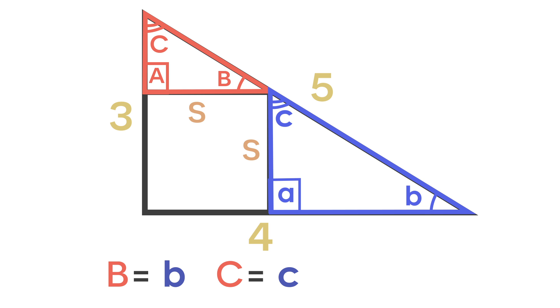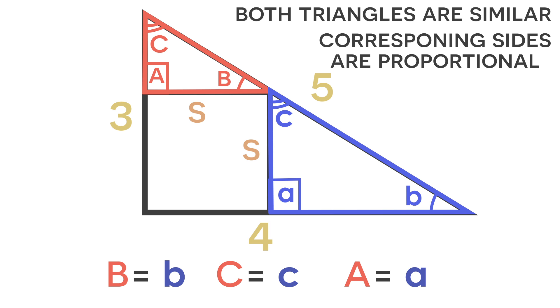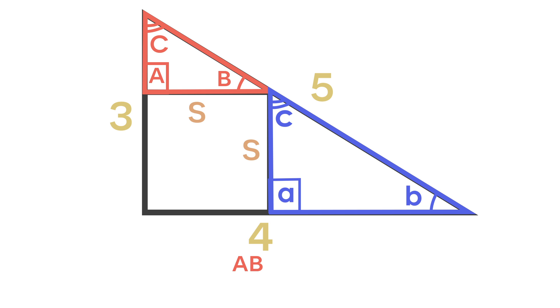So now notice how all three angles in both triangles are equal to each other. Because of this, we know that the triangles are going to be similar. And because these triangles are similar, we know that the corresponding sides are going to be proportional to each other. So in other words, side AB over AC in one triangle is going to be equal to side AB over AC of the other triangle. And now we can substitute all of our information into this equation and we can solve for s.